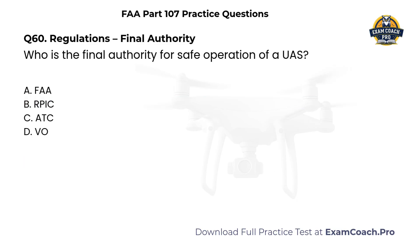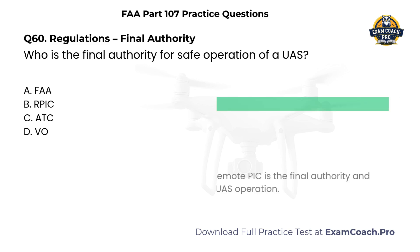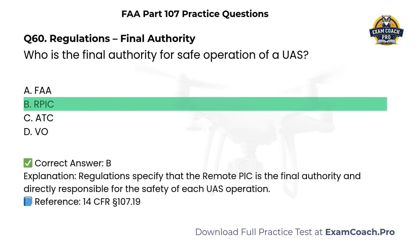Regulations — Final Authority. Who is the final authority for safe operation of a UAS? A. FAA. B. Remote PIC. C. Air traffic control. D. Visual observer. Correct answer: B. Remote PIC. Regulations specify that the remote PIC is the final authority and directly responsible for the safety of each UAS operation.